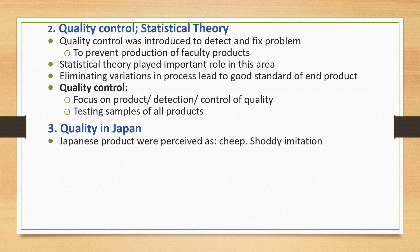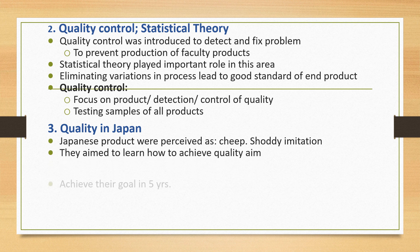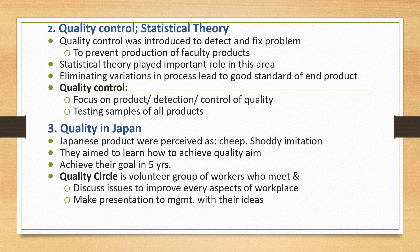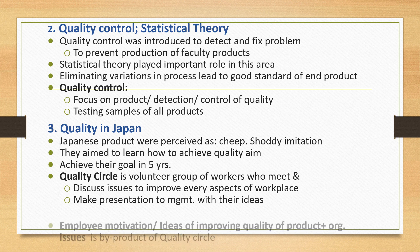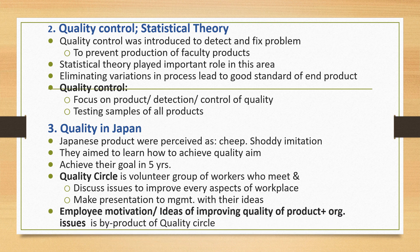Next is quality in Japan. Japanese products were initially perceived as cheap and shoddy imitations. They aimed to learn how to achieve quality, and achieved their goals within five years. Quality circles are volunteer groups of workers who meet and discuss issues to improve every aspect of the workplace and make presentations to management with their ideas. Employee motivation and ideas for improving quality are a by-product of quality circles.